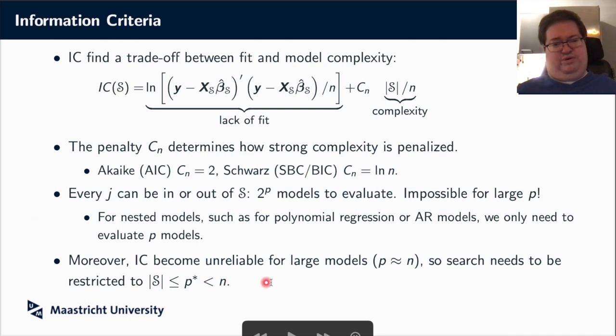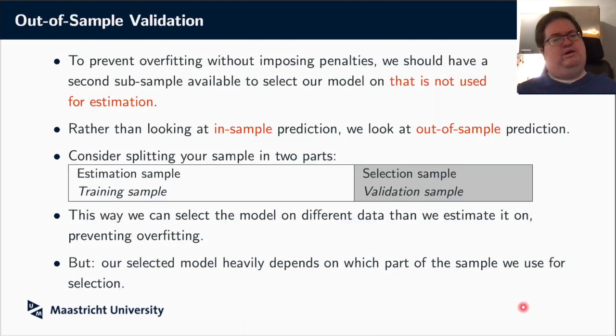And there's another issue, because if p becomes close to n, well, look at the fit thing, it will become super unreliable, because with p equal to n, we can fit our data perfectly. So you get very strange results when you reach p close to n, and if p becomes larger than n, it even becomes impossible. So you would anyways need to put on a restriction saying, I want to have at most p star variables in my model, and this should be significantly smaller than n for this to work.